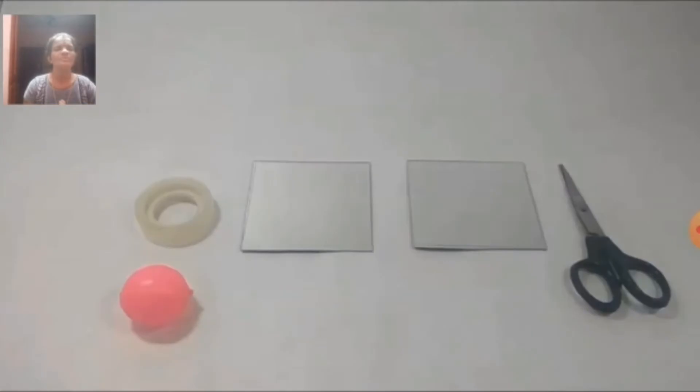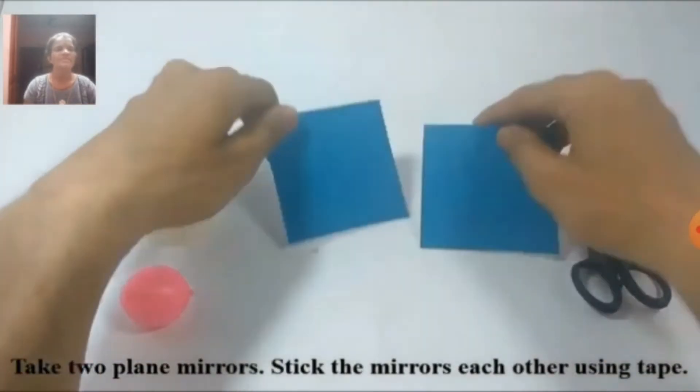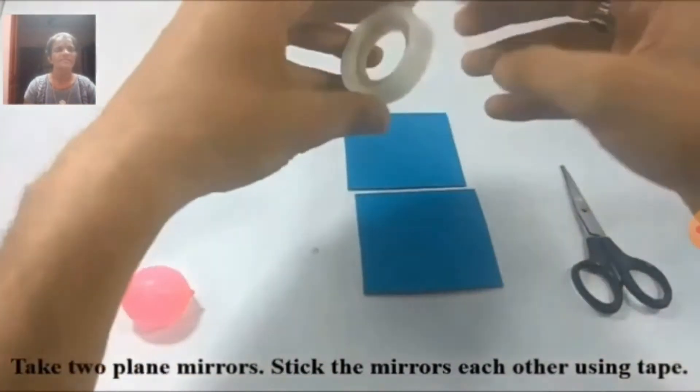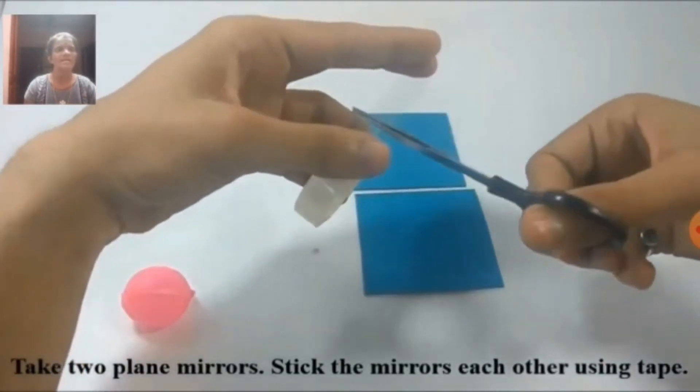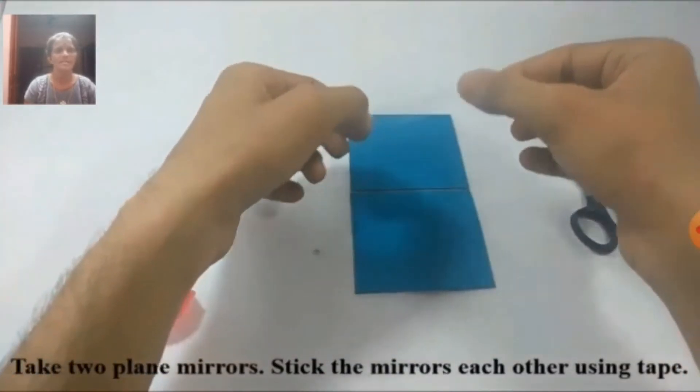You are aware that a plane mirror forms a single image. What happens if two mirrors are kept in combination? For that, take two plane mirrors of the same size. Then you can stick these two mirrors using tape. Fix the mirrors by using tape.